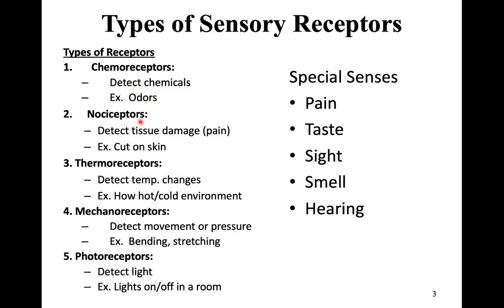Nociceptors are found everywhere in your body and detect pain. Thermoreceptors — 'thermo' like a thermometer — detect temperature changes around your body. Mechanoreceptors are mechanically sensed receptors; they measure pressure changes like touch, feel, bending, and stretching. These are not really considered a special sense, but we're going to see these types of receptors in hearing.